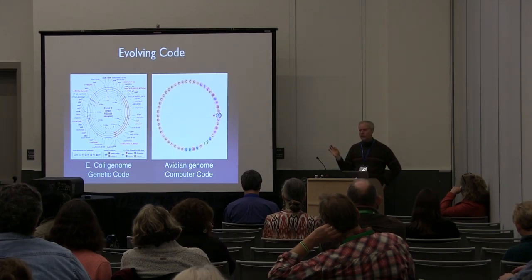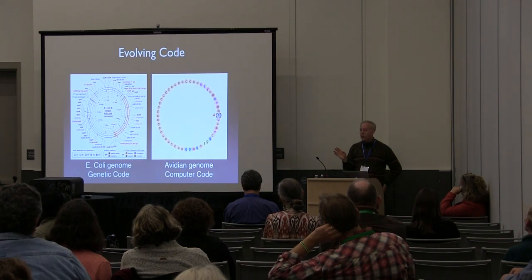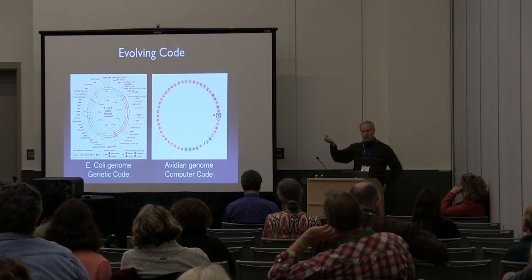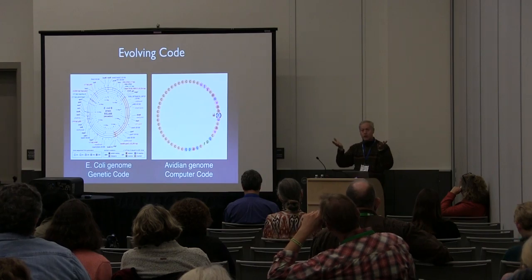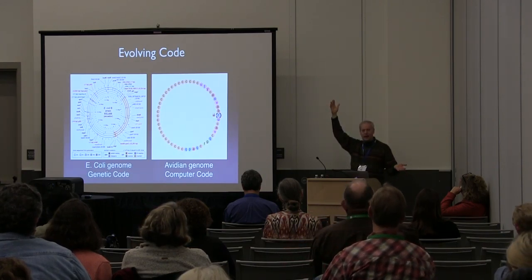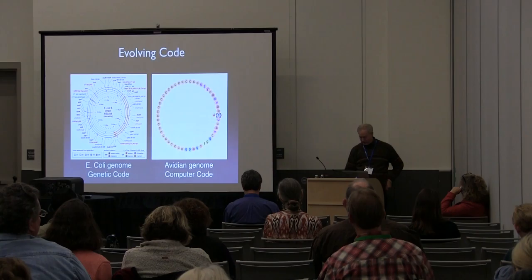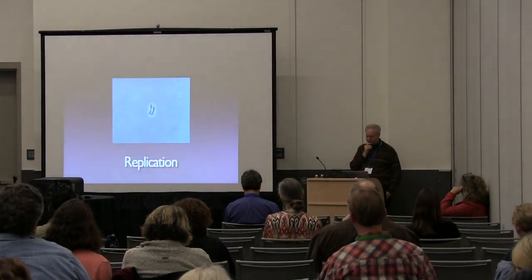The point here is that the causal process of variation, replication, and natural selection is going to happen exactly the same way in this digital code as it does in biological code. We're not modeling the specifics of DNA or anything biochemical. We're modeling the thing that Darwin discovered — just those causal elements at a level of abstraction that can work at all these levels.